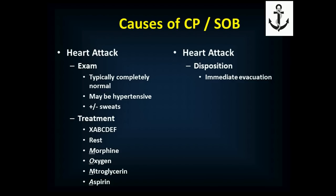Nitroglycerin comes in 0.4 milligram tablets or sprays, given every five minutes as needed for pain. Morphine range will probably be 2 to 10 milligrams IV — discuss with medical control. If symptoms aren't getting better and you think they're having a heart attack, your disposition is immediate evacuation. They need evaluation to determine whether they're having an ST elevation MI, where either clot-busting medications or cardiac catheterization to open the blockage are the most important interventions.